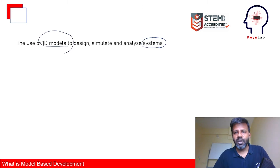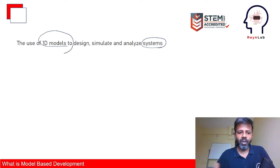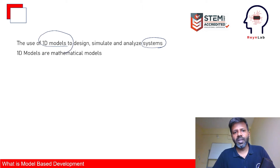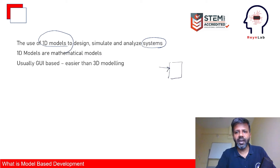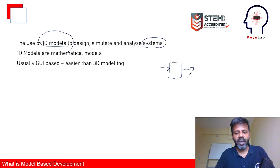The key point is that we use 1D models. A lot of you are familiar with 3D modeling, CAE, and CFD. Model-based development tries to do literally the same thing but using 1D models. These are basically mathematical models — don't be afraid of that word. 1D models are usually GUI-based, which means they are far easier than 3D modeling. To model an engine, you just drag and drop some blocks, call one a cylinder, and connect arrows to represent airflow.